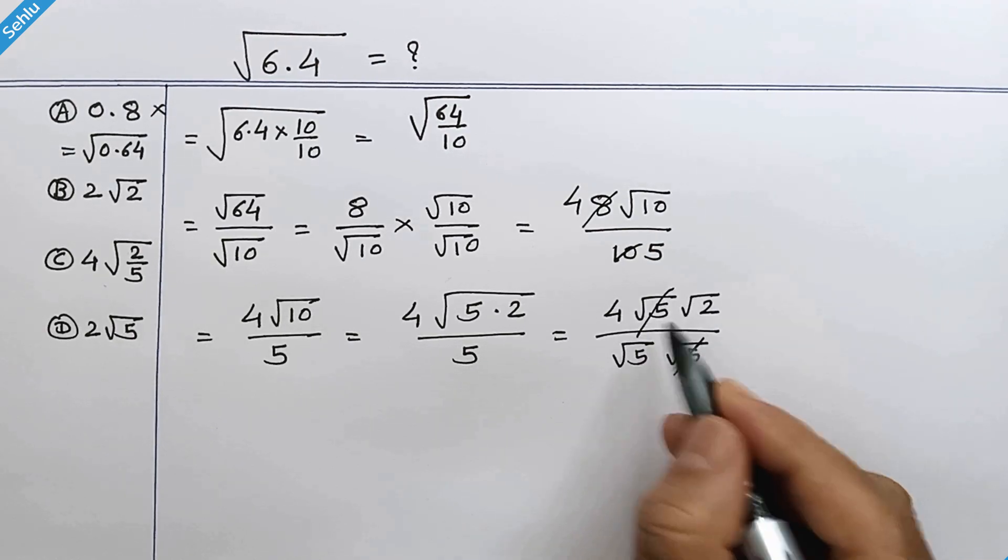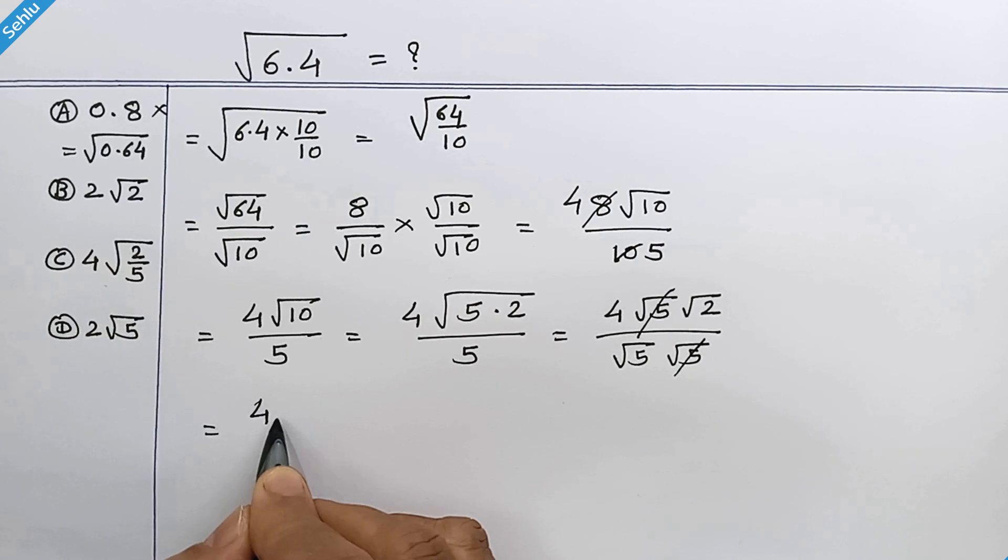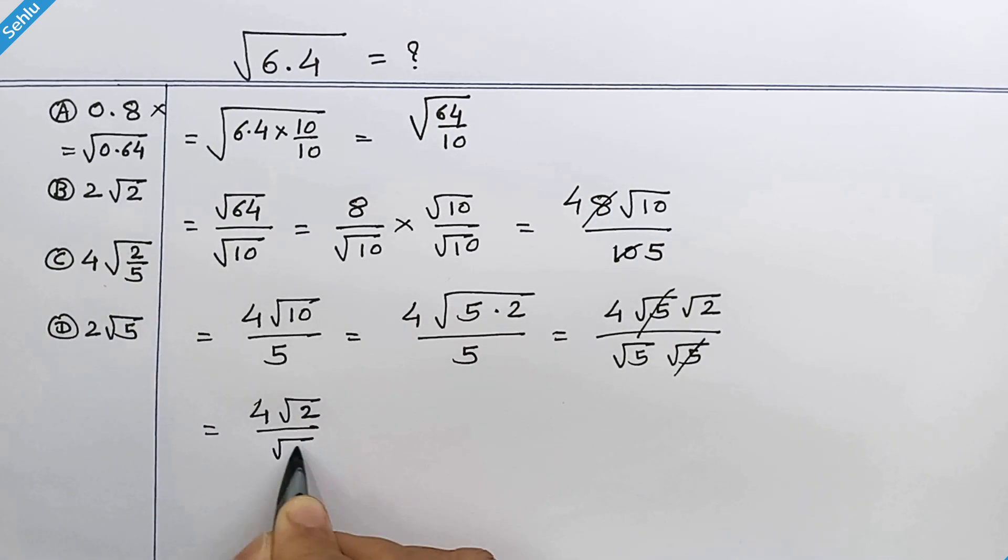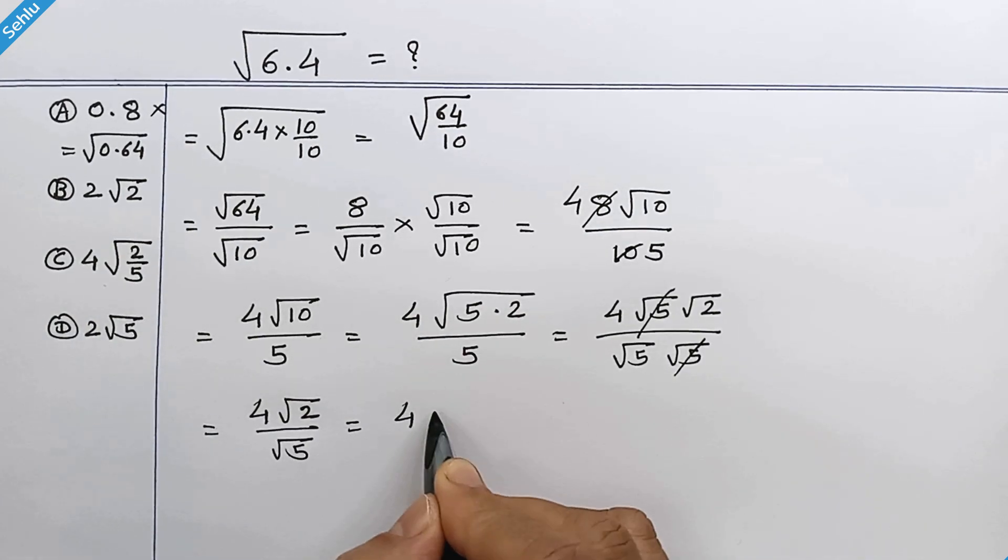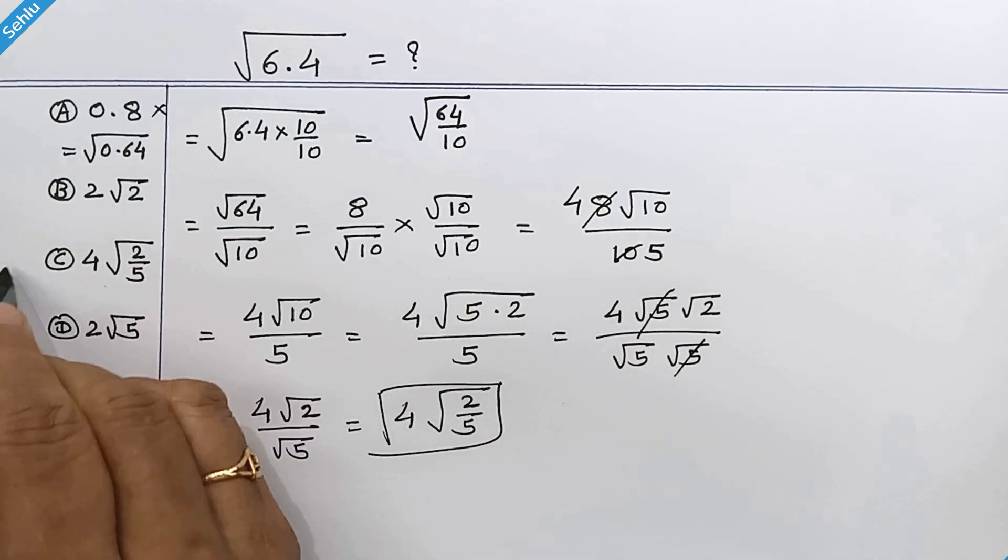Now the square root 5 terms cancel out, so we have 4 times square root 2 over square root 5. We can combine this as 4 times square root of 2 over 5. So option C is the correct answer.